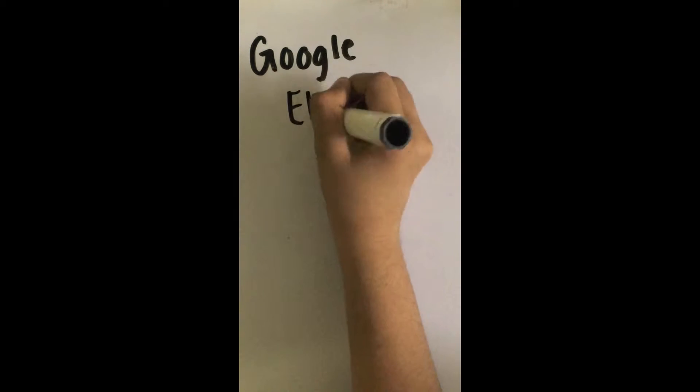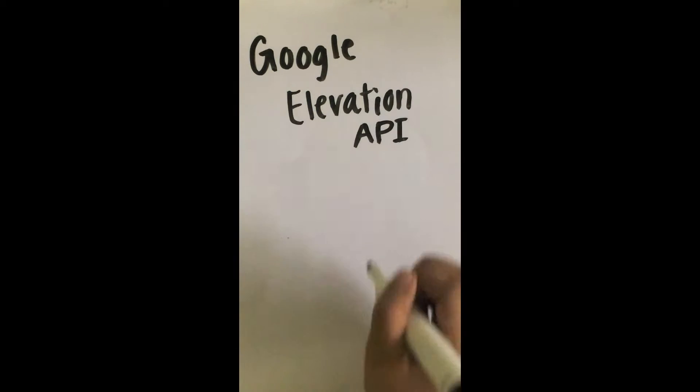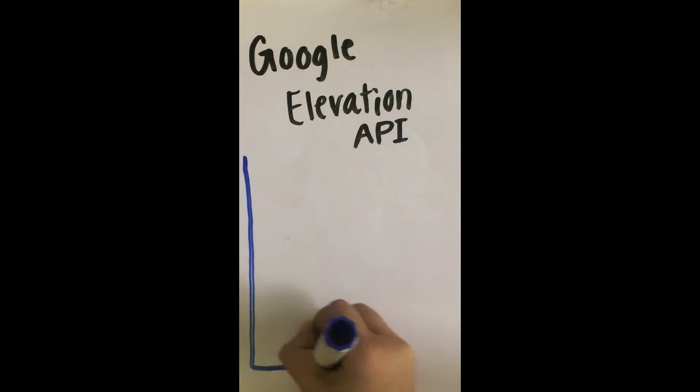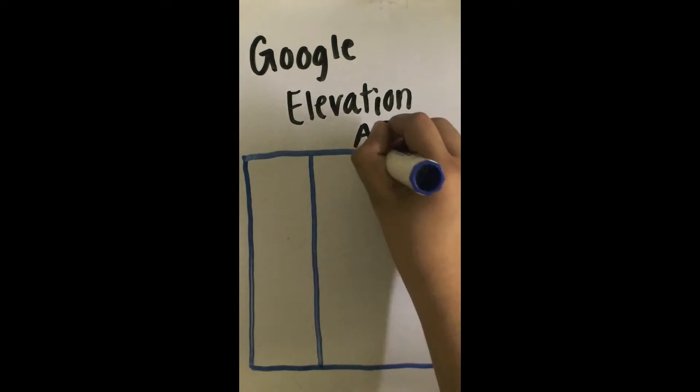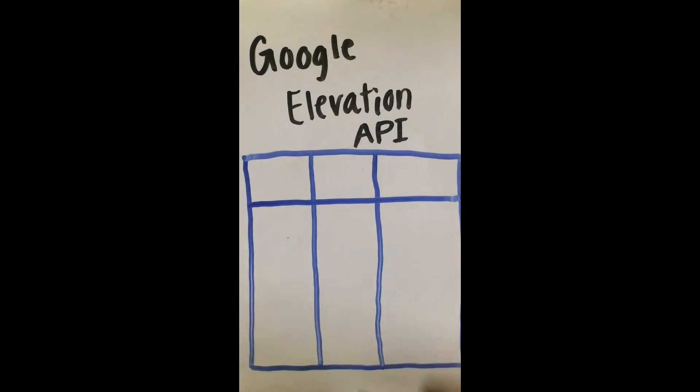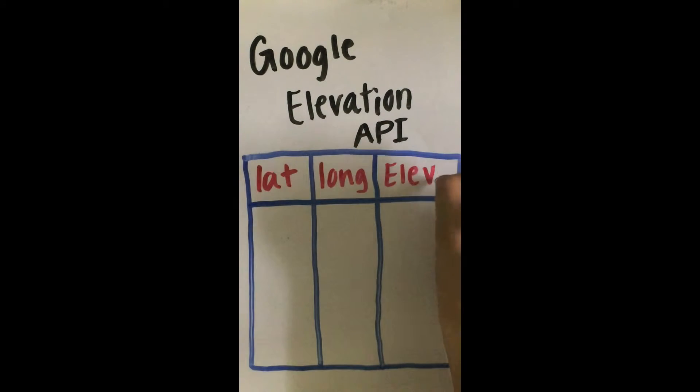First, I have written a Java program to obtain the elevation of various points in the city using Google's Elevation API. This elevation data is collected using the latitude and longitude matrix of the city.